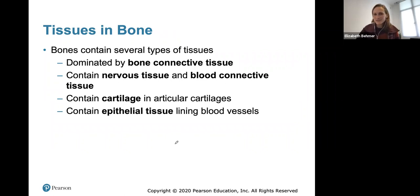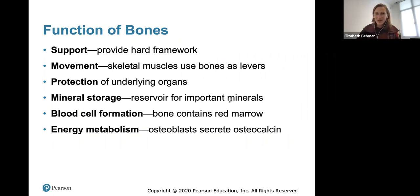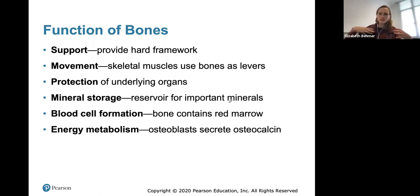Bones contain several types of tissues. They are dominated by bone connective tissue, but also contain nervous tissue, blood tissue, cartilage at the articular surfaces, and epithelial tissue lining the blood vessels. The functions of bones include support, providing a hard framework for the body; movement, as skeletal muscles use bones as levers; protection of underlying organs like the cerebrum and heart; and storage of minerals, acting as a reservoir.